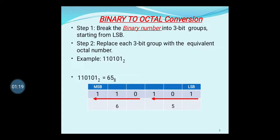Here we will check out one example. The given example is 110101 — it's a binary number. In the tabular form shown, that number is written as 110101, with the LSB bit and MSB bit marked. Step 1 is to start grouping into 3 bits starting from the LSB bit. As shown by the arrow, from the LSB bit, when we start grouping 3 bits, it becomes 101 from LSB and 011 towards the MSB side.